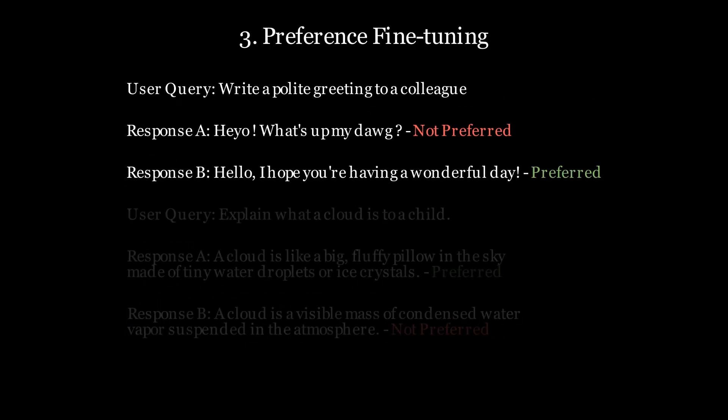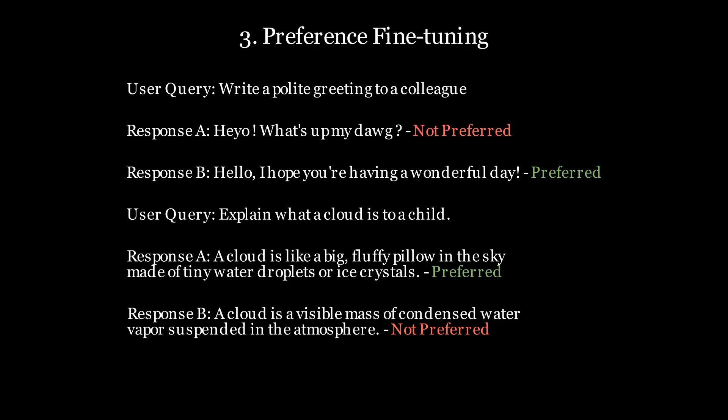In the final stage of the training process, the model learns to understand user preferences. This helps in aligning with ethical guidelines and reducing the likelihood of producing any biased or harmful content. This also helps in understanding what the user expects from the system.